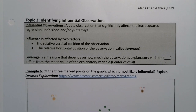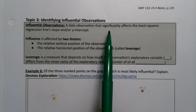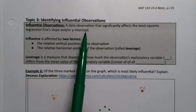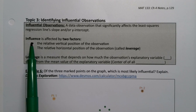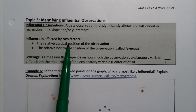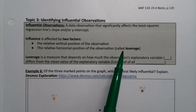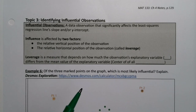The last thing we want to discuss is identifying influential observations. Influential observations are data observations that significantly affect the least-squares regression line's slope and/or y-intercept. You're really looking for two things: the relative vertical position of the observation, and the relative horizontal position of the observation, called leverage.